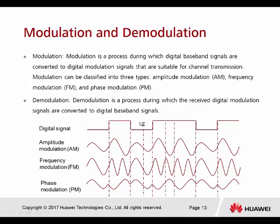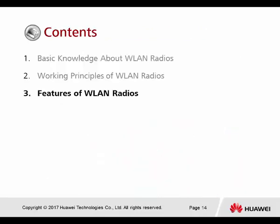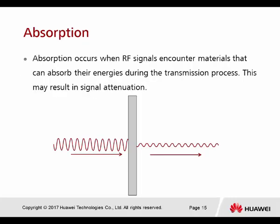There are three types of modulation for radio waves. Now for the features of WLAN radios — the first is absorption. Absorption occurs when a radio frequency signal encounters material that can absorb the energy during the transmission process, resulting in signal attenuation. As shown in the picture, when the radio wave passes through an obstacle, the amplitude becomes lower and weakened, but the phase and size of the radio wave still maintain the original form — only the amplitude is affected.